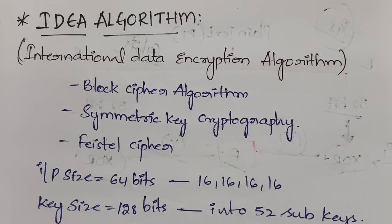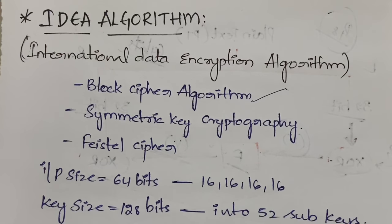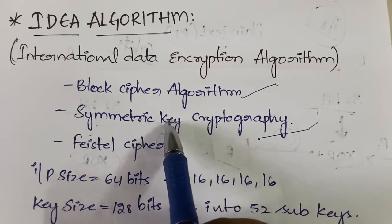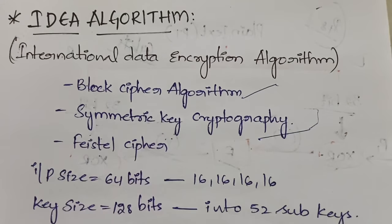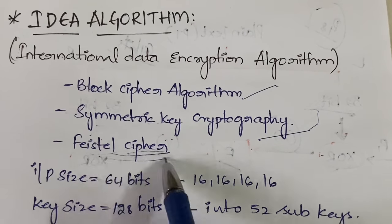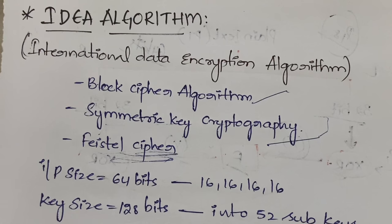First let us see the features of IDEA. It is a block cipher algorithm — you will be dividing the plain text into a number of blocks. It is a symmetric key cryptography, meaning the same key will be used for both encryption and decryption. It is also a Feistel cipher, meaning you will be dividing the plain text into a number of parts.